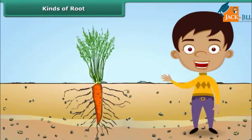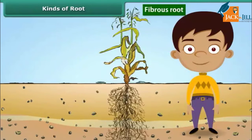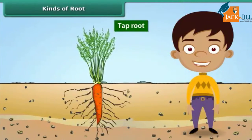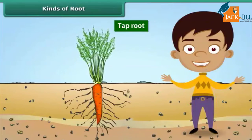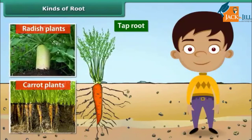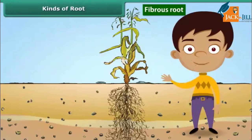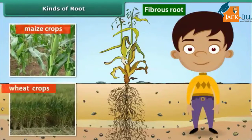Roots are of two types: tap roots and fibrous roots. A tap root is a single large root that grows straight down deep into the soil. Small roots that branch from it are called lateral roots — for example, roots found in radish and carrot plants. Fibrous roots, on the other hand, are a cluster of fine roots that spread into the soil — for example, roots found in maize and wheat crops.